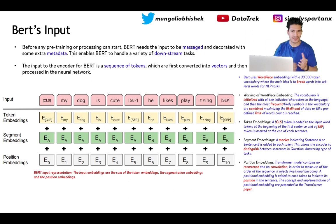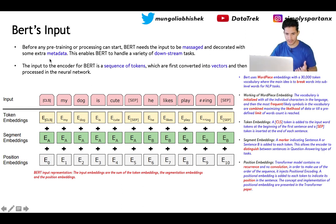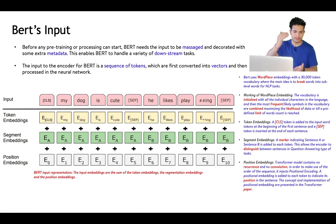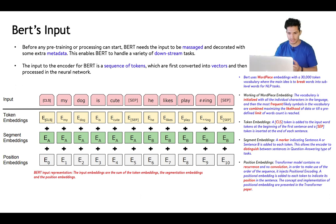Before any pre-training of BERT can happen, the input has to be prepared with some extra metadata. BERT uses three types of embeddings. The input words are passed through word-piece embedding — a vocabulary of words. If an input word is not in the vocabulary, it will be broken up and adjusted. There is also segment embedding, since BERT's pre-training takes two input sentences — you must specify which is sentence A and which is sentence B.